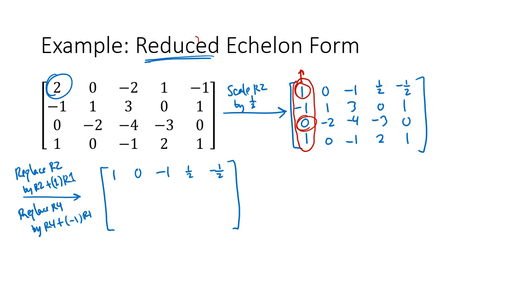Row 2 + row 1 gives me 0, 1, 2, 1/2, 1/2. Row 3 didn't change: 0, −2, −4, −3, 0. For row 4: (−1) × row 1 plus row 4 gives 0, 0 in the first two entries; −1/2 + 2 = 3/2; −1/2 + 1 = 1/2 — wait, actually −1/2 + 1 = 1/2. New row 4 is 0, 0, 0, 3/2, 3/2. Column 1 is now the way I wanted it.